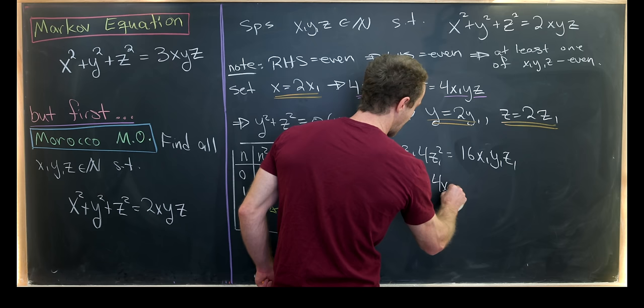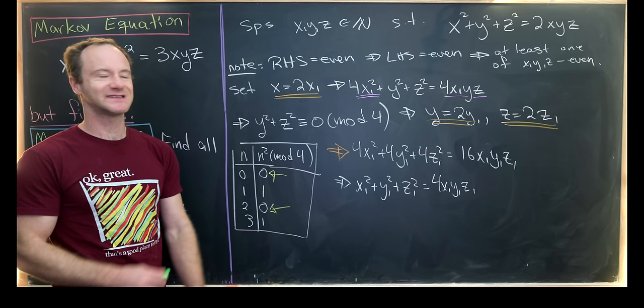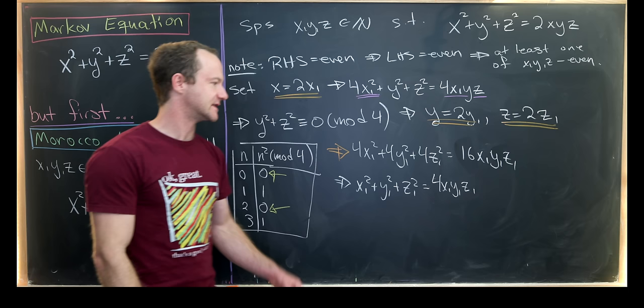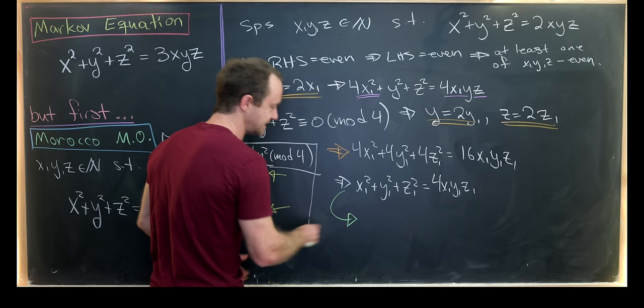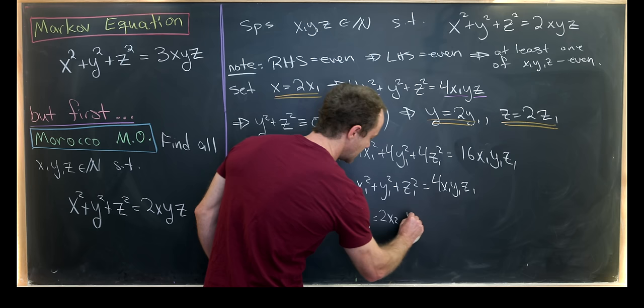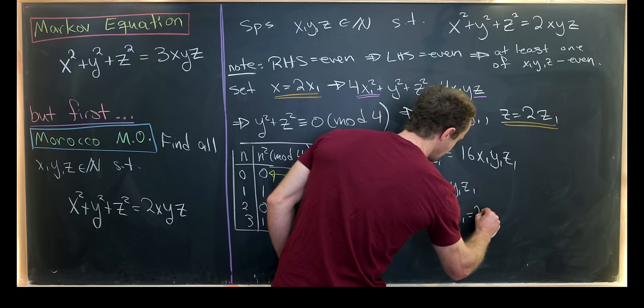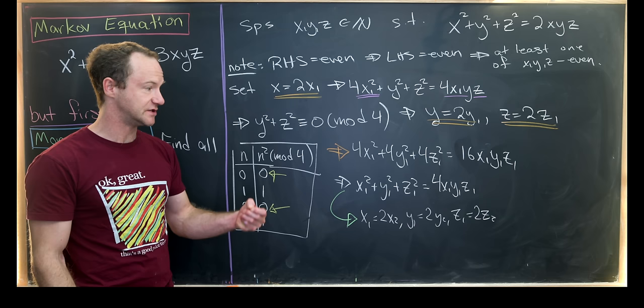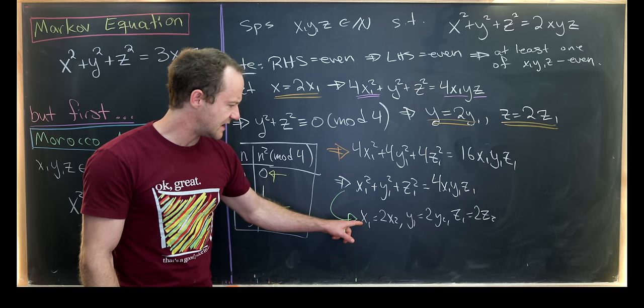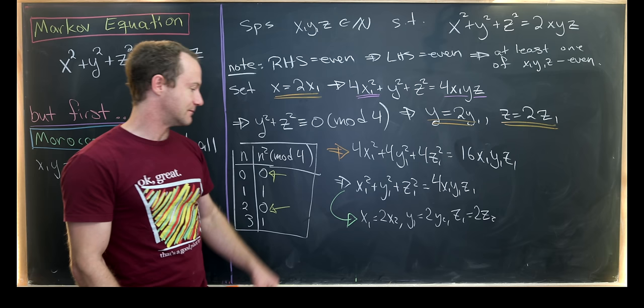But now we can divide both sides by four, and that'll leave us with x₁² + y₁² + z₁² = 4x₁y₁z₁. But now we can play this entire game again using the fact that we know the right hand side is even, and so on and so forth, and what we'll see is that x₁ = 2x₂, y₁ = 2y₂, z₁ = 2z₂. In other words, they're all even. And then we can play that game again to show that x₂, y₂, z₂ are all even as well.